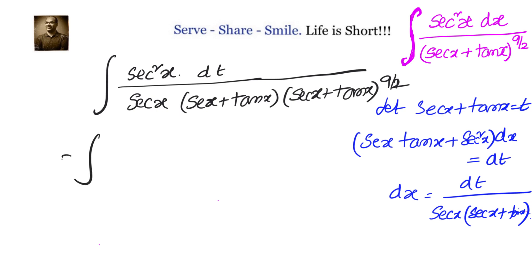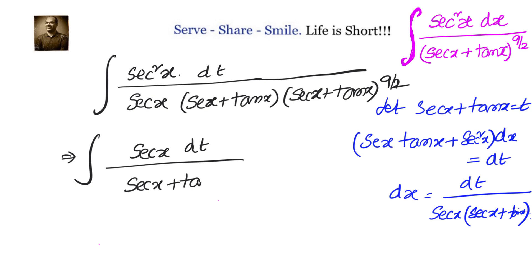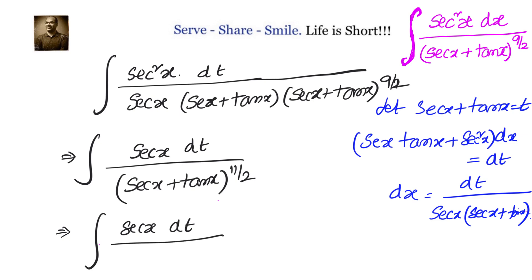Now one secant x will cancel, so in the numerator we'll have secant x dt divided by secant x plus tan x whole to the power of 11 by 2. This equals the integral of secant x divided by t to the power of 11 by 2.